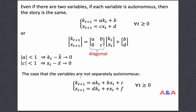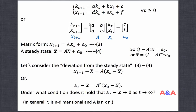But in general, if there are two variables, k_{t+1} should depend not only on its own past value, but also on the past value of x. And x_{t+1} also depends not only on its past value, but also on the past value of k. If we express such a dynamical system in matrix form, then the coefficient matrix is no longer a diagonal matrix.